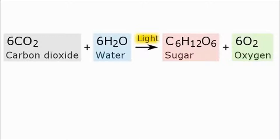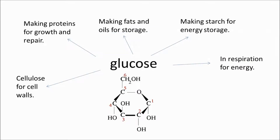In fact, plants use some of the glucose they make from photosynthesis for respiration, and this provides them with the energy they need for growth and repair and all that other stuff. So plants use carbon dioxide and water to build glucose molecules.